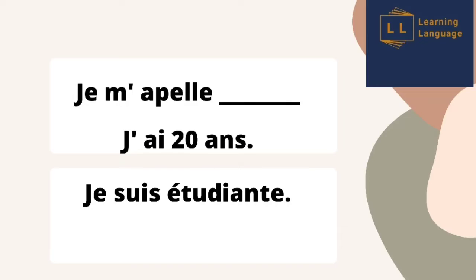The second statement describes your age: 'Je' — I am — then the number, for example 'vingt et un' (21). In French, there are two verbs which are majorly used: 'être' and 'avoir'. Here, 'j'ai' uses the verb 'avoir', conjugated with 'je'. 'Je' is 'I' here. The conjugations of verbs will be covered in upcoming sessions, so don't worry about that part.